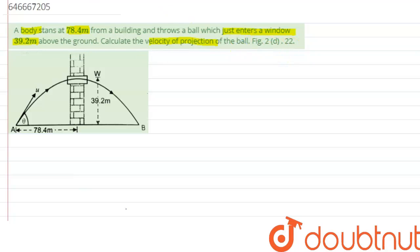As we can see in the figure, the boy is standing here which is 78.4 meters from the building, and he is throwing a ball with an angle theta from the horizontal. So we need to calculate this velocity.